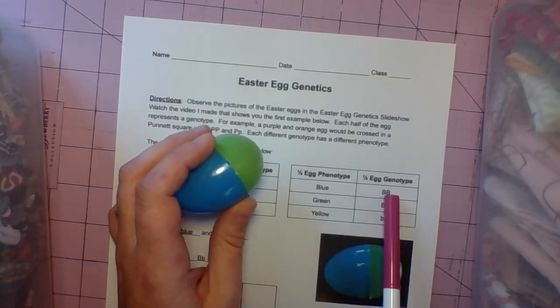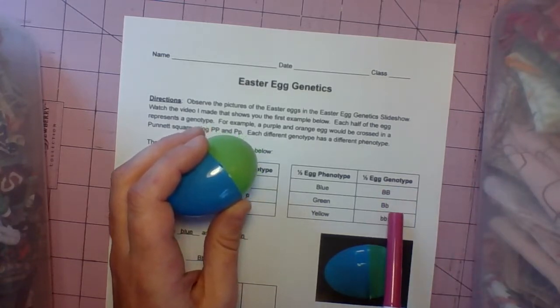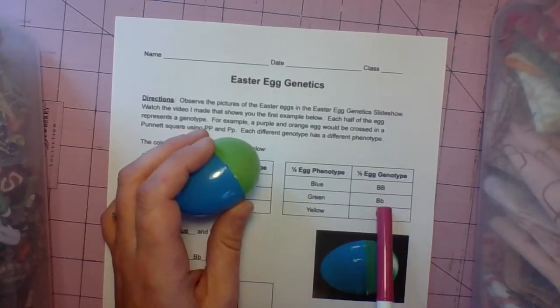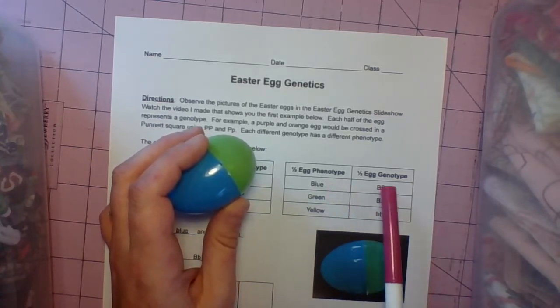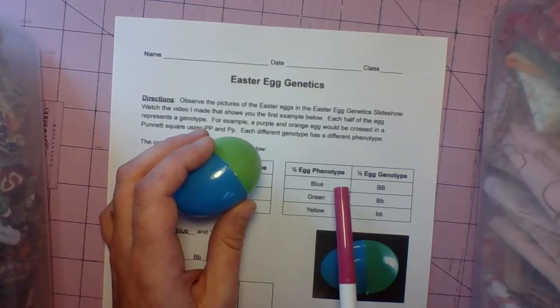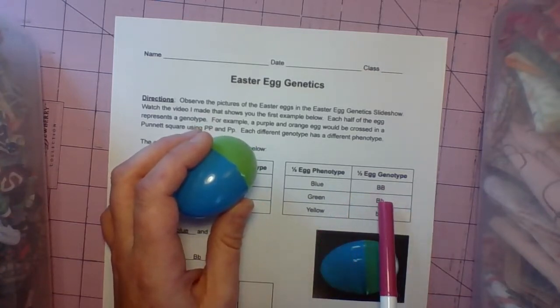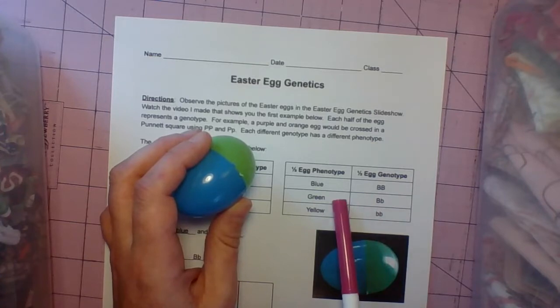Blue is big B, big B. Green is big little, the heterozygous. And yellow is little b, little b, both lowercase, so we know that's recessive. Also notice that each different genotype has a different phenotype. We've been practicing this week that as long as there's a big B there, you'd think it would be blue. But no, this heterozygous has its own genotype. So be aware of that.